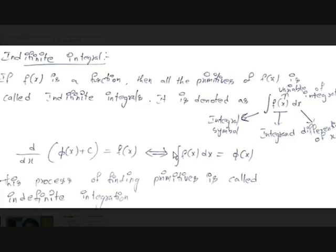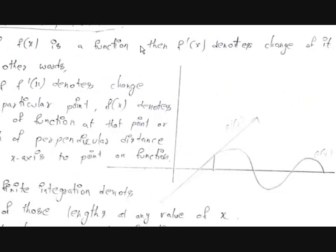This process of finding the indefinite integral is called indefinite integration. You may be wondering how we can represent this graphically. The differential represents the slope of the function at a particular point — in other words, it represents the change in the function at that point. Let's look at the graphical representation of integrals. As you can see, we have a function and the derivative of that function at some point, which denotes the slope at that particular point.